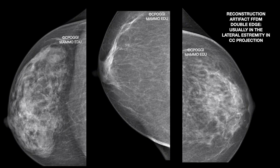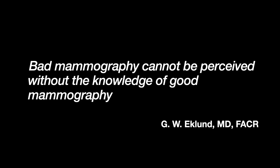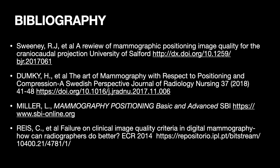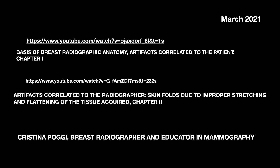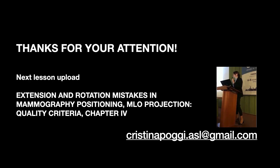I'll also show you this artifact — a double-edged artifact. It's very common and actually not correlated to the radiographer, but to the reconstruction process of the image. We shall remember Dr. Eklund's words: we must know what a good mammography is to recognise our mistakes and know how to correct them. This is a short bibliography; for those interested, there are links to the first and second chapters of this series. In the next lesson — the last one — we talk about extension and rotation mistakes in positioning for the MLO projection.